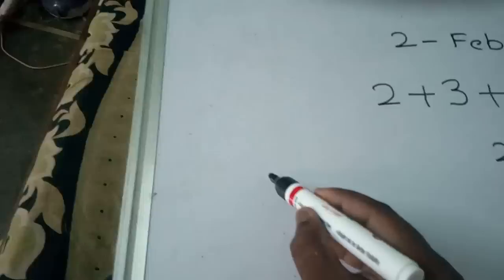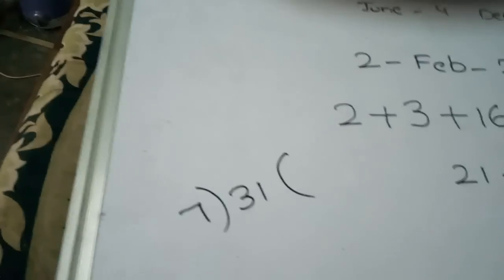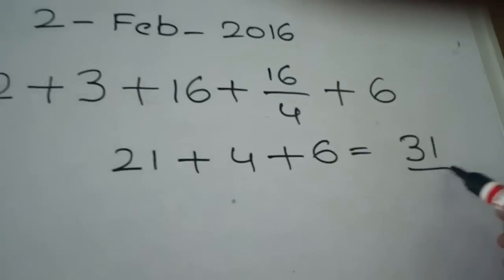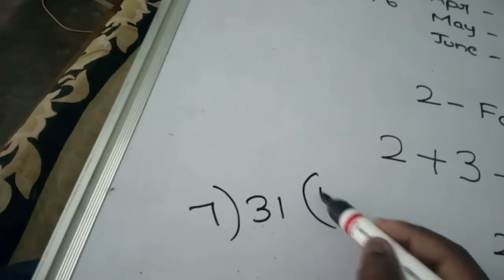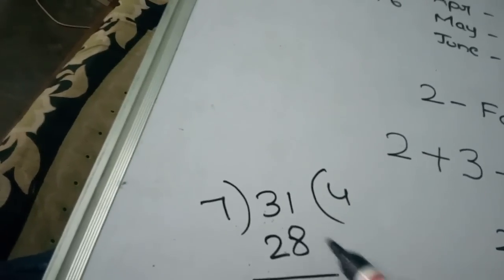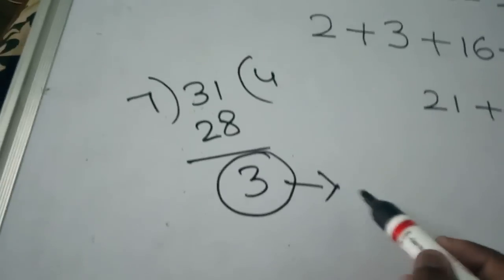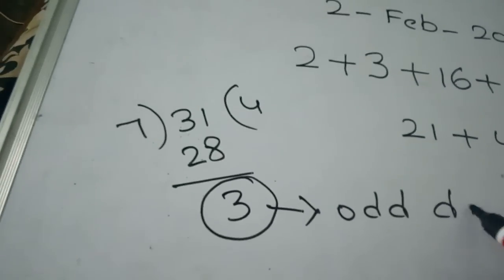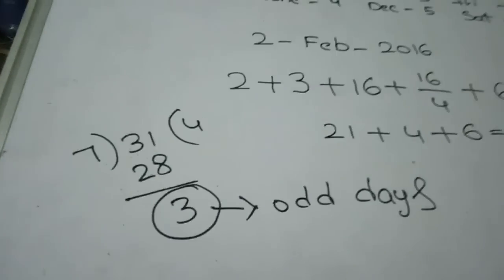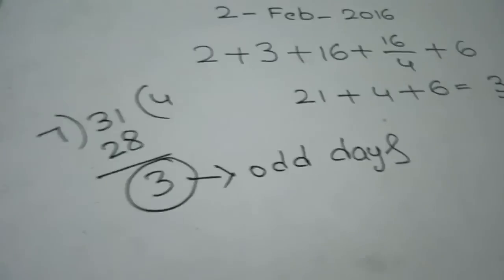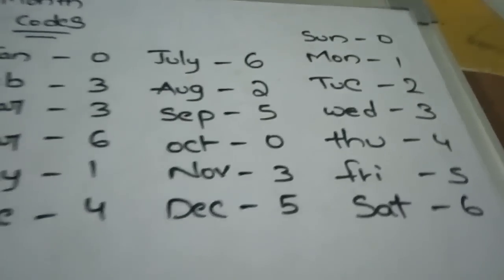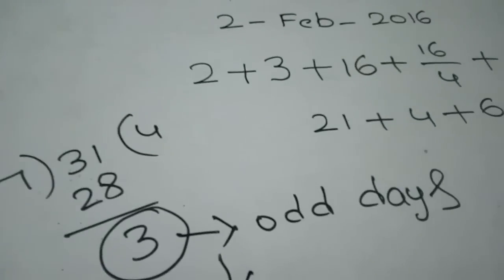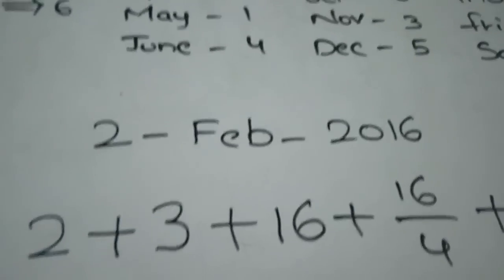Now divide 31 by 7. Seven goes into 31 four times — that's 28. The remainder is 3. This remainder of 3 is called the odd days. Go to the day codes: 3 is Wednesday. So 2nd February 2016 is a Wednesday.